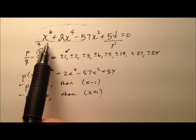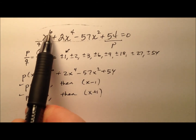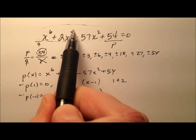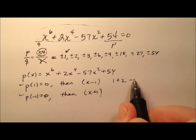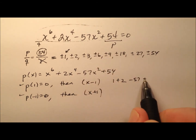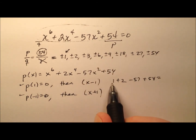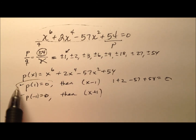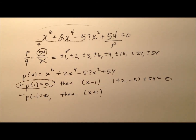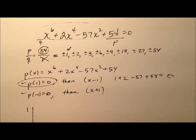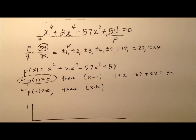Let's plug 1 in first. So 1 to the 6th is 1, plus 2 times 1, minus 57 times 1, plus 54. That does make 0 — this one actually works. So since I have one that works immediately, let's go ahead and use synthetic division.